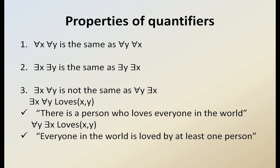For example, there exists X, for all Y, loves(X, Y) means 'there is a person who loves everyone in the world.' But for all Y, there exists X, loves(X, Y) means 'everyone in the world is loved by at least one person.' These are different statements, showing that mixing quantifier types is not commutative.